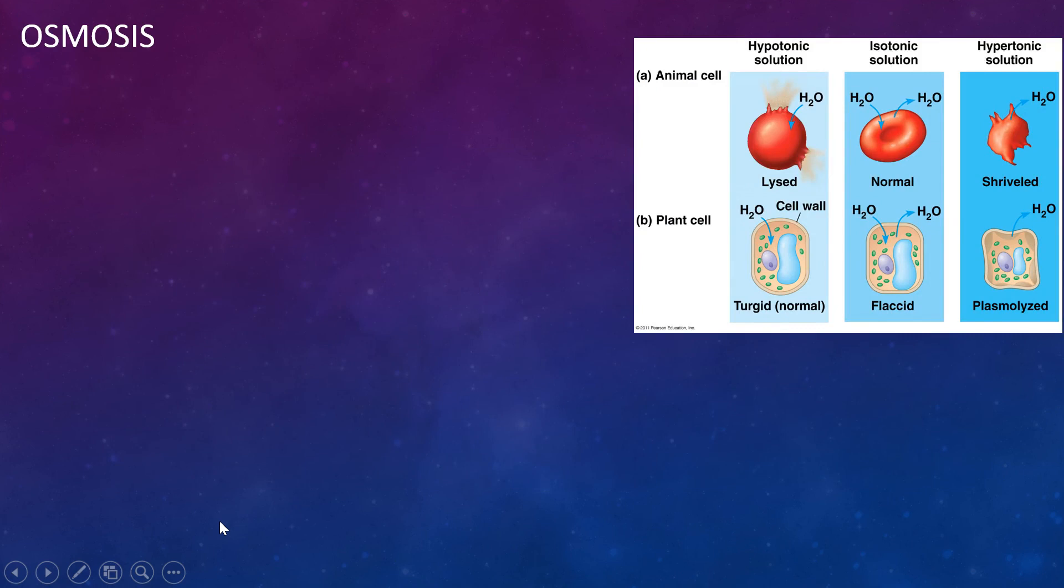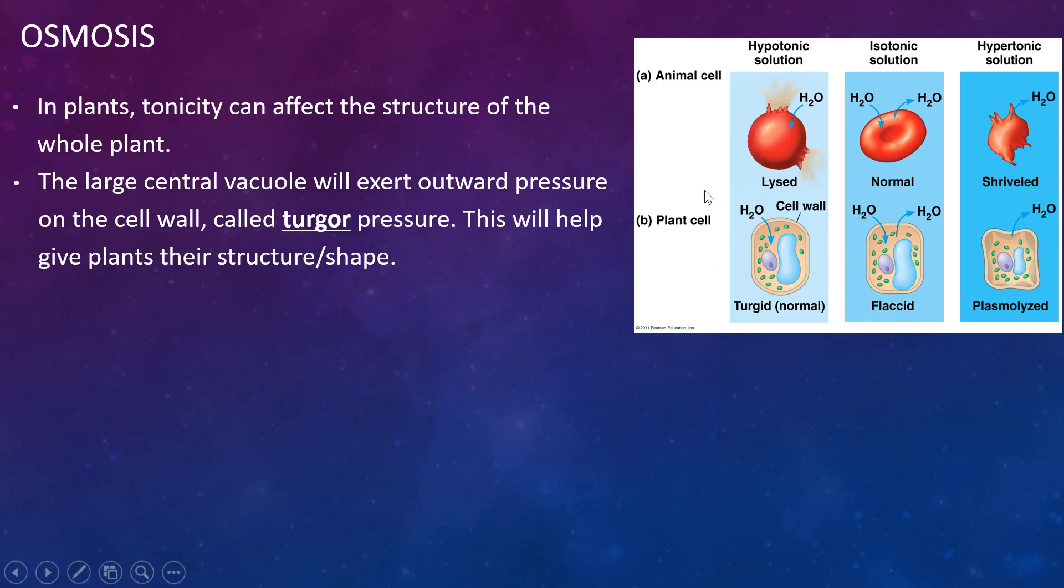So this is our idea of osmosis. We mentioned in animal cells, we kind of want that isotonic solution, but actually in plant cells, we prefer it to be in a hypotonic solution. That's because we need that pressure to push against the side of the cell wall, that turgor pressure, and that's going to help with the structure of the shape of the plant cell.